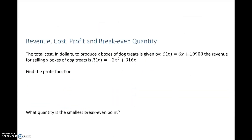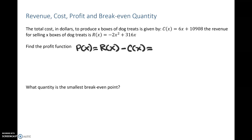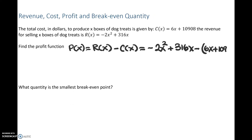Back to our problem. It gives us a total cost for selling dog treats and a revenue function. So we're going to find a profit function. The profit function is found by taking our revenue function and subtracting our cost function. That's going to be negative 2x squared plus 316x, subtracting — don't forget parentheses — 6x plus 10,908.